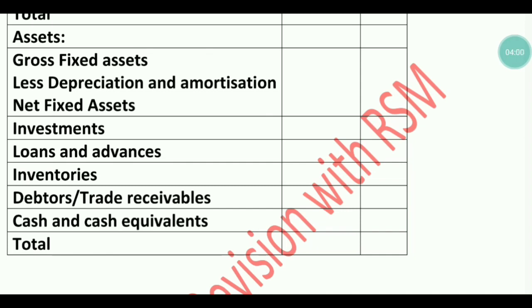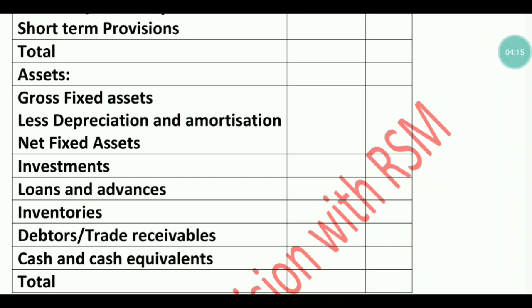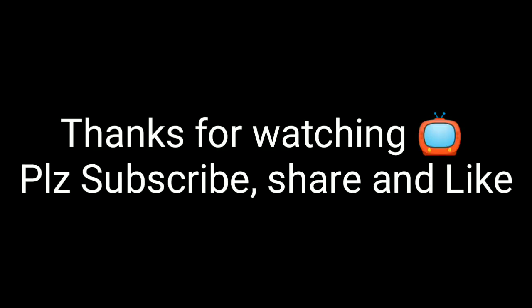Next is Debtors or Trade Receivables — record debtors, trade receivables, and bills receivables if given in the question. After that is Cash and Cash Equivalents — cash, bank, etc. The last point is the Total. These are all the points related to the Balance Sheet asset side. The LLP format is not difficult, but you first need to make both formats, and then do your postings accordingly to earn posting marks.